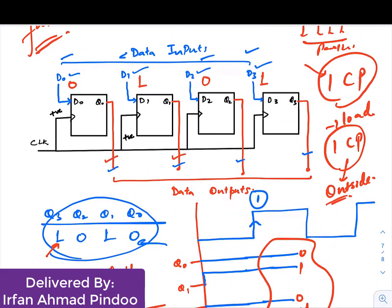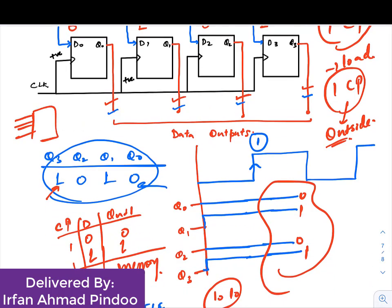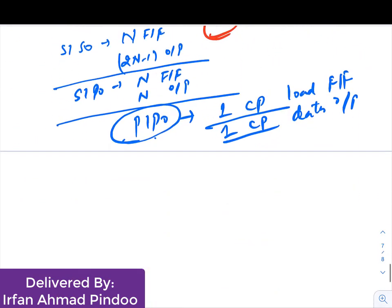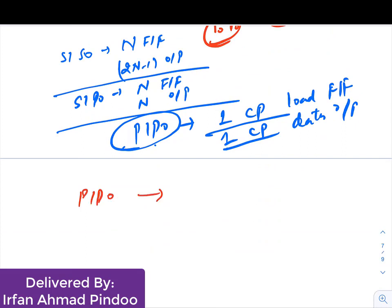PIPO is the fastest one, but there is one disadvantage. The number of wiring required is large. You need four wires at the input and four wires at the output for four bits. If you are doing eight bits, you would need eight wires here and eight wires here. This type of system is not feasible if your distance is very large.